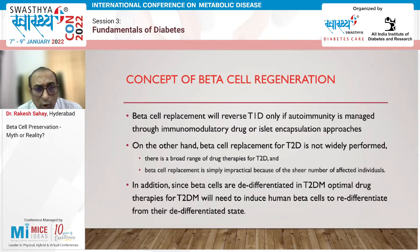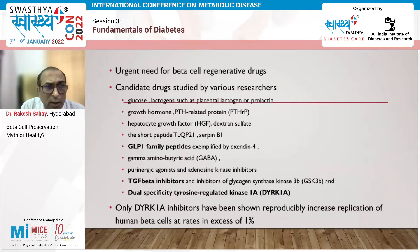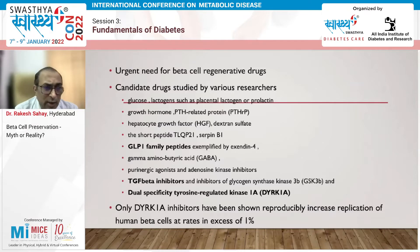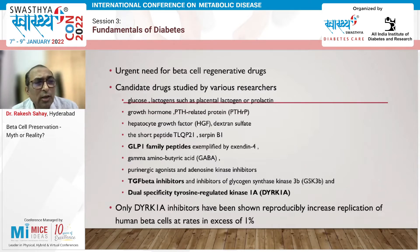There is a need to combine beta cell replacement or regeneration with therapies that can suppress the immune response. In both type 1 and type 2 diabetes, there is a need to study whether we can regenerate beta cells. Several candidate drugs — growth hormone, PTH-related peptide, hepatocyte growth factor, GLP-1s — have been studied.